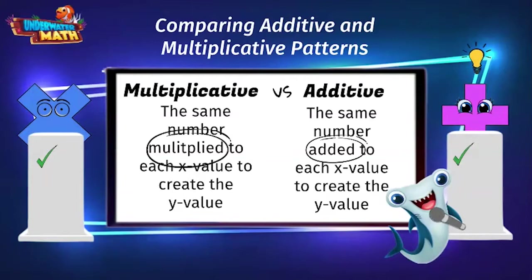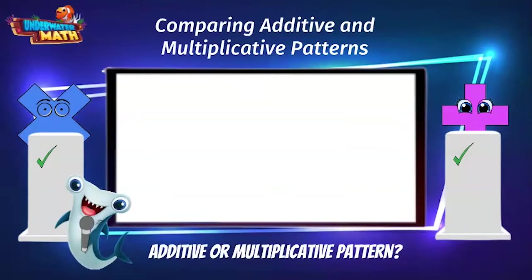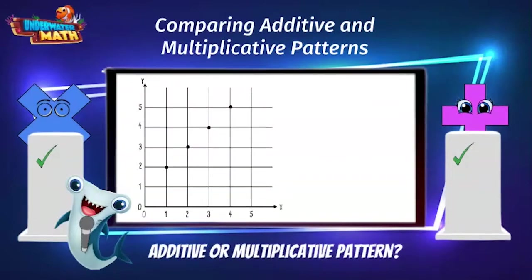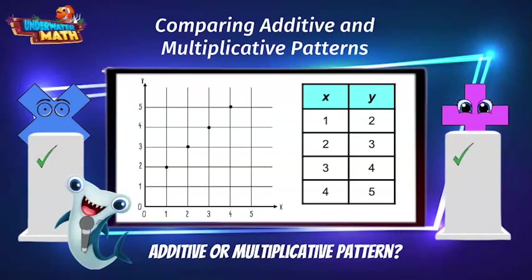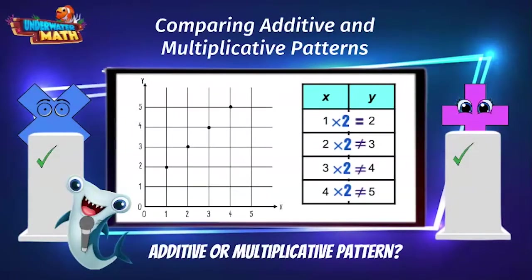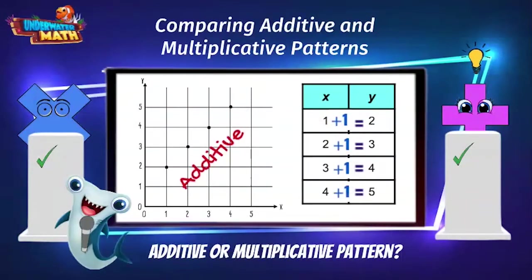Let's look at our next question. Contestants, is this an additive or multiplicative pattern? To assist with this question, we will create a table that displays the coordinate points from the graph. Let's look closer at the coordinate points so we can see the relationship between the x and y values. Looking at the first point, we can see that to get from x to y, we can either multiply by 2 or add 1. Multiplying by 2 does not work for every point, but adding 1 does. What does that tell you about this pattern? Yes, Addy. It is additive, because it is adding the same number to each x value to get the y value. That is correct. Addy is in the lead with 2 points.